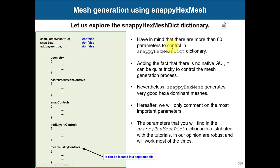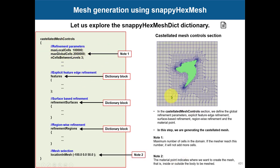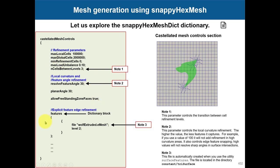The snappyHexMesh dictionary has more than 60 parameters, which can be intimidating. The dictionaries provided here have been cleaned up significantly, leaving only the compulsory and most important options with recommended parameters. This cleaned dictionary can serve as a standard template for your meshes because it's very robust. For geometry definition, you have keywords with notes you can read later.